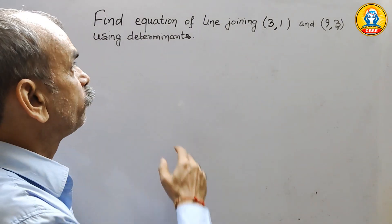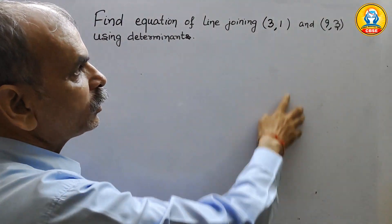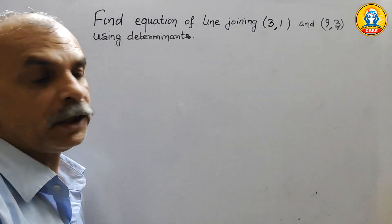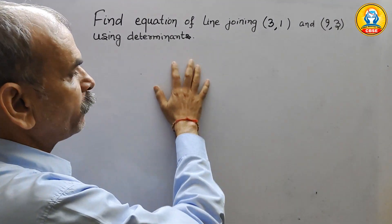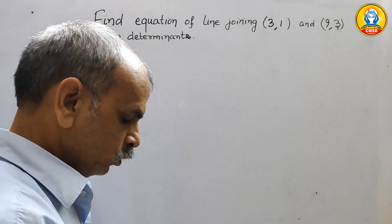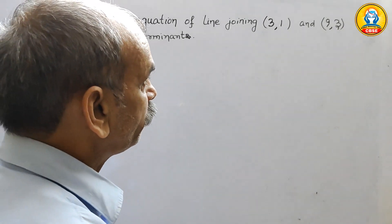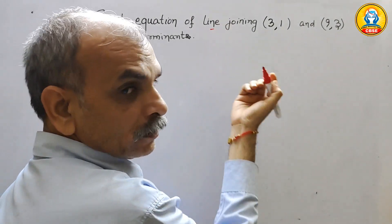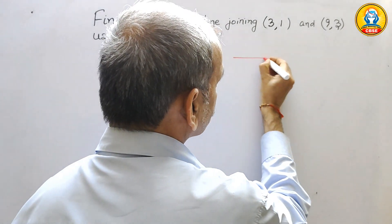Your question is, find equation of line joining (3,1) and (9,3) using determinants. So how? We will make a line, so make a line like this.